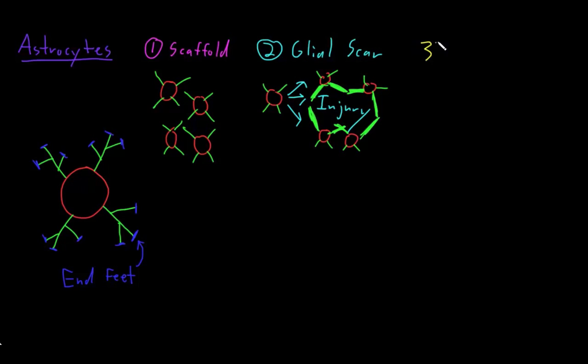Another function of astrocytes is homeostasis. And homeostasis just means trying to keep everything in optimal conditions. And homeostasis of the interstitial fluid, that is the fluid between all the cells of the central nervous system. And this is very important because the neurons require a very fine-tuned, a very even keel environment for them to function properly. And if certain things, like the concentrations of certain ions, and particularly potassium ions, if those concentrations are abnormal, the neurons can't function properly.